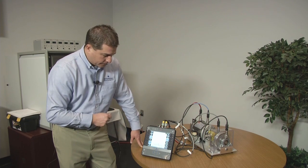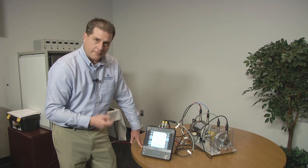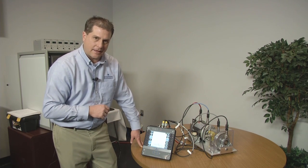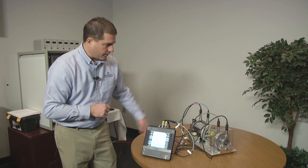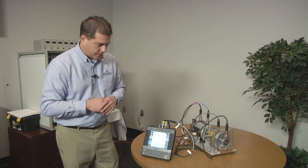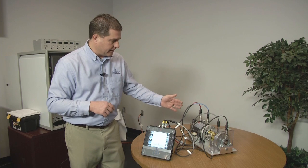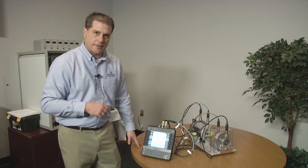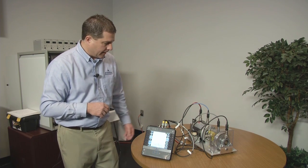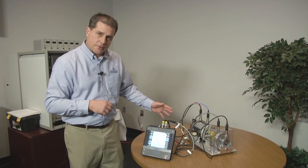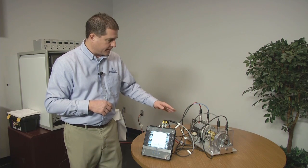Now what I can do to further verify that I think I've got a misalignment condition is cross-channel phase across a coupling is a good indication, a good test to run to show misalignment. If it really is a misalignment condition, then I should see 180 degrees phase shift across this coupling. And so this is where the four channel CSI 2140 comes in handy.